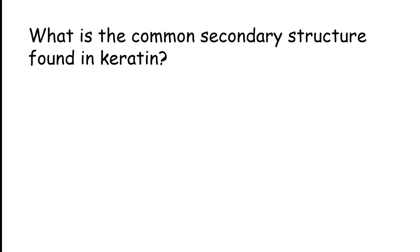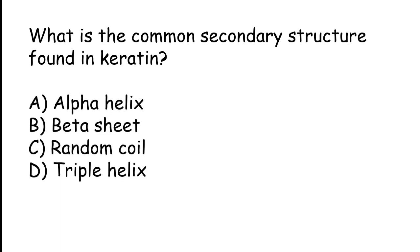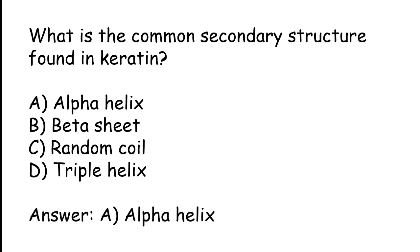What is the common secondary structure found in keratin? Options: alpha helix, beta sheet, random coil, triple helix. The correct answer is option A: alpha helix.